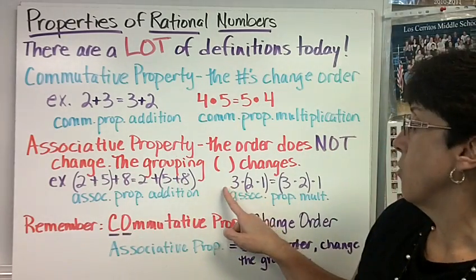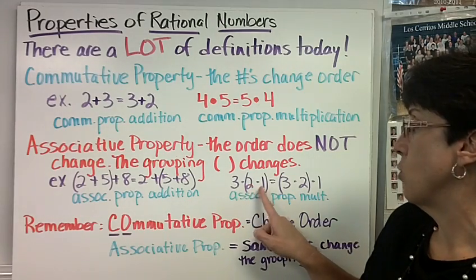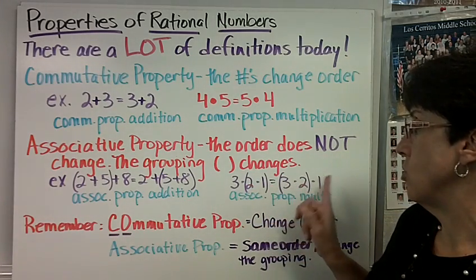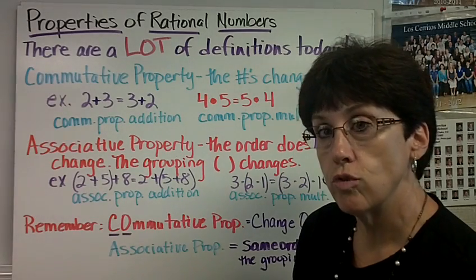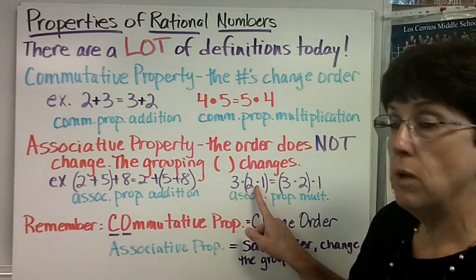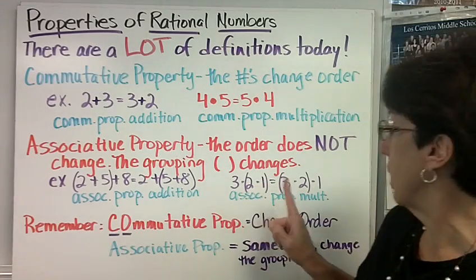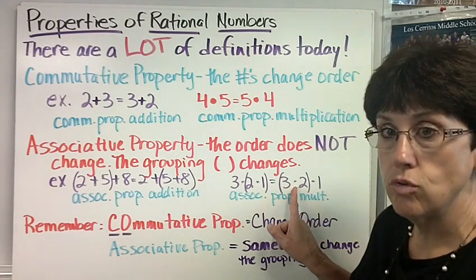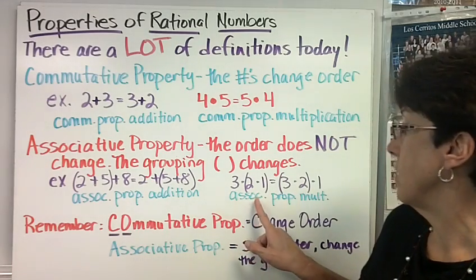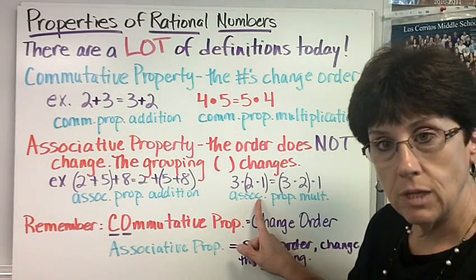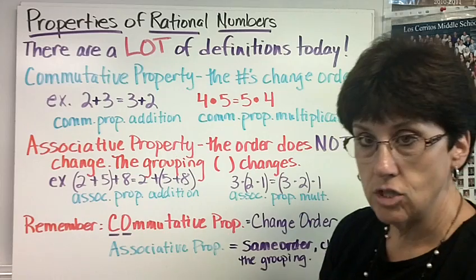This is the associative property of addition because it's all addition. Now let's look at the next one. 3 times 2 times 1 equals 3 times 2 times 1. The order again did not change, but look who's grouped together. Here, 2 times 1 is grouped together. Here, 3 times 2 is grouped together. So the grouping has changed. This is an example of the associative property of multiplication.